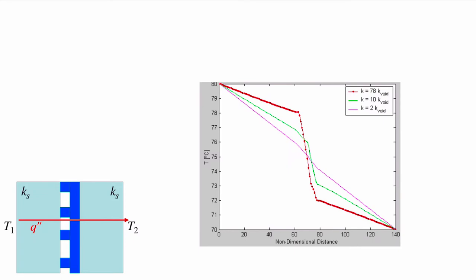As we change the thermal contact of the material relative to the void, what I plotted here is three curves. The red curve where the material Ks is 78 times the conductivity of this void, the green case where the material is only 10 times more conductive than the void, and the purple case where it's only two times more conductive than the void. What we can see is the net effect of that redistribution through that contact is that as the difference between the void conductivity and the solid conductivity gets larger, we see a very sharp decrease in temperature over that small contact, and that sharp decrease decreases as the conductivity becomes more and more similar between those two materials.